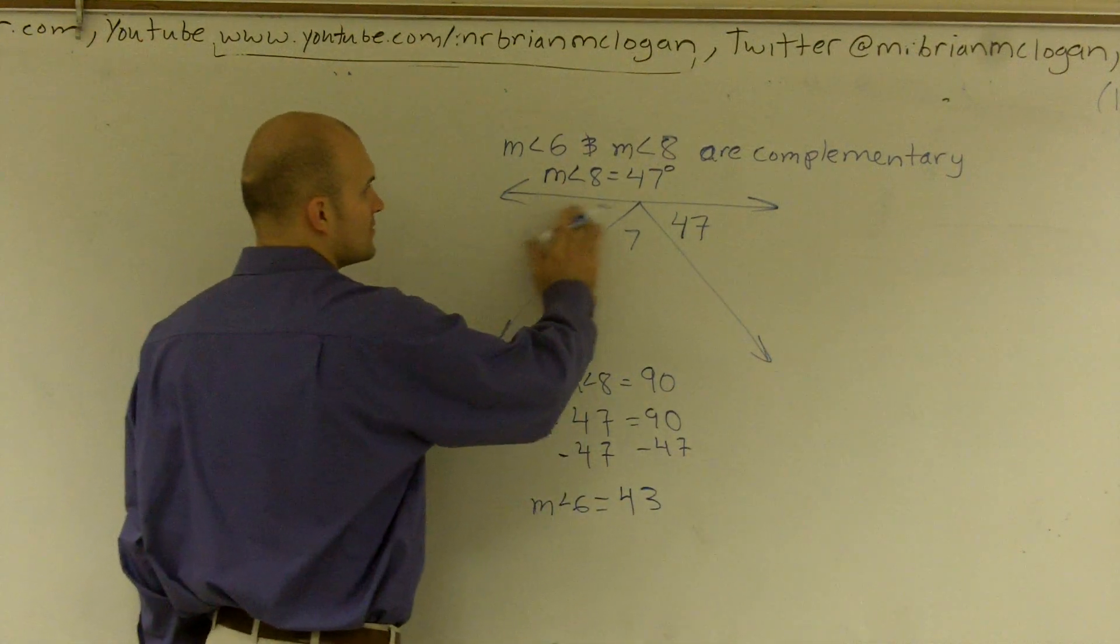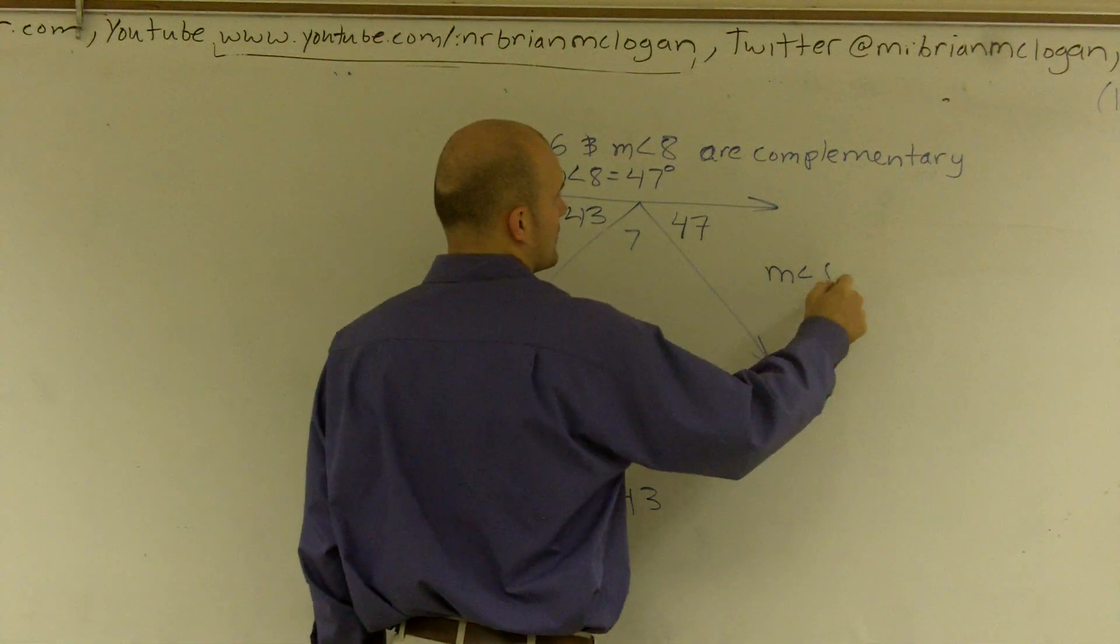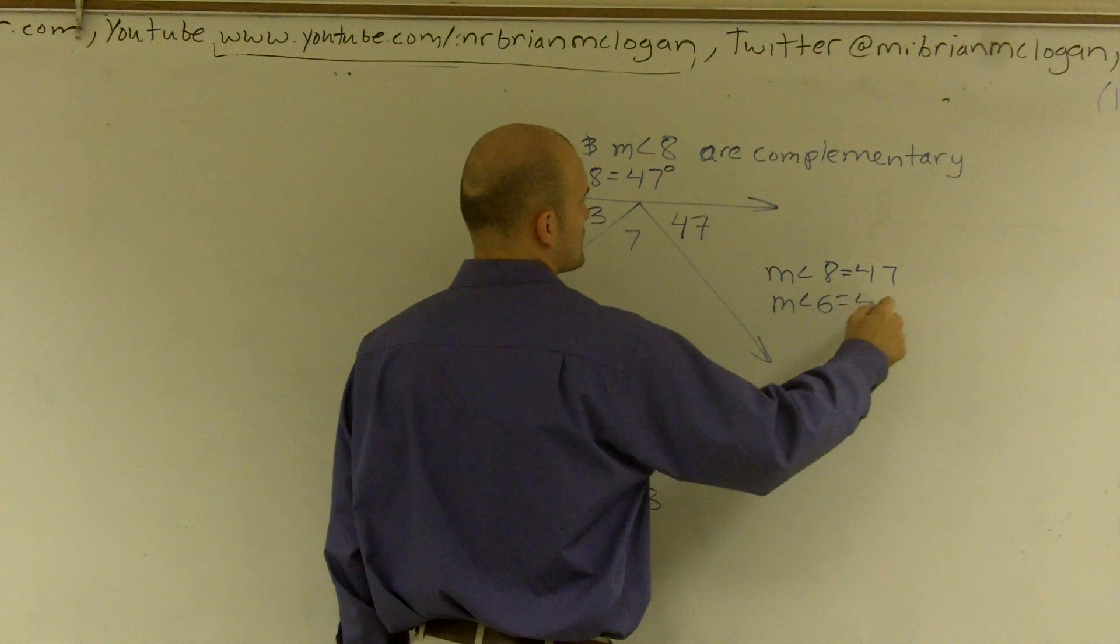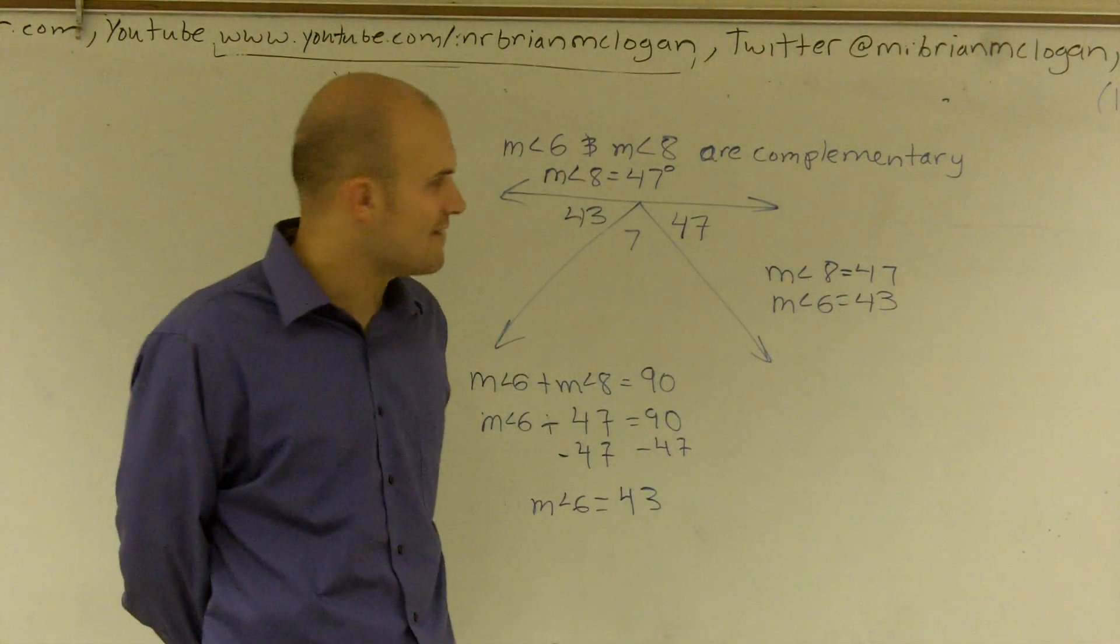So now I can plug that in right here. So, so far I have measure of angle 8 equals 47. Measure of angle 6 equals 43. And now I need to figure, how am I going to figure out the measure of angle 7? Well,